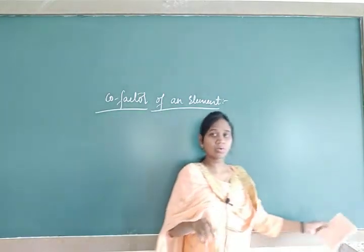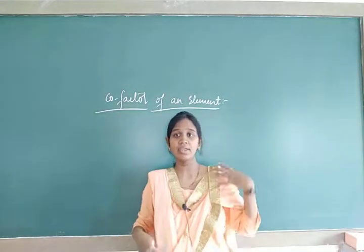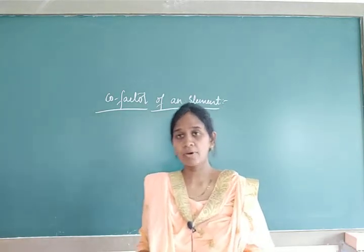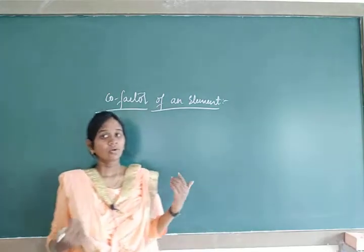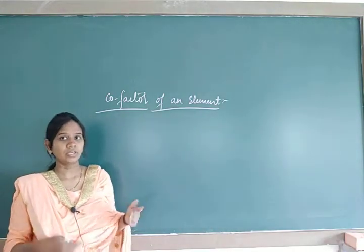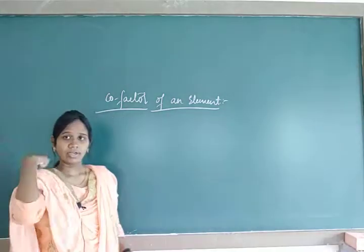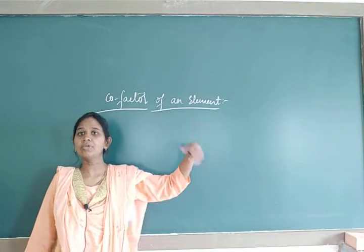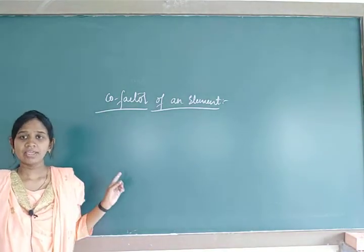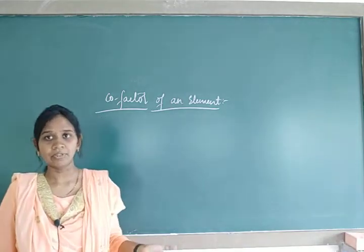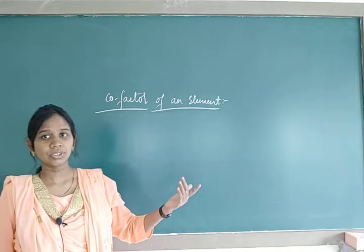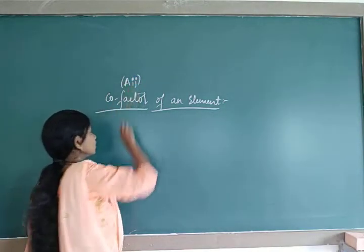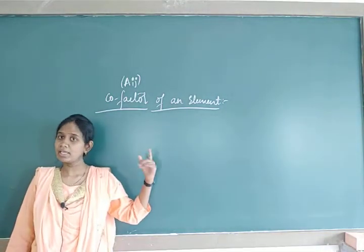Next we will discuss the cofactor. We are discussing all these concepts in order to arrive at the A inverse formula. We are already familiar with A inverse using elementary row or column transformation, but by the help of a formula also we can find A inverse. To have that formula, we need the knowledge of minor, cofactor, and adjoint. Cofactor is denoted by capital A_ij.